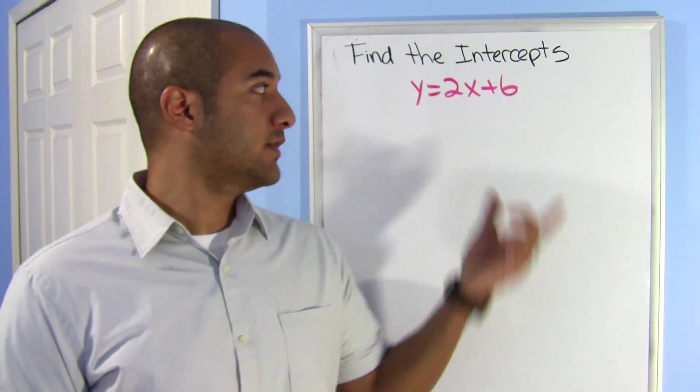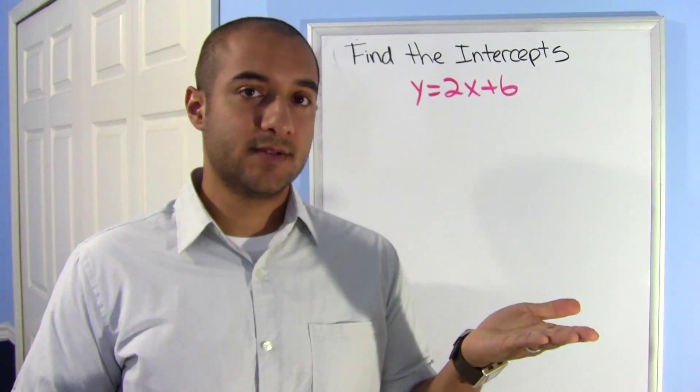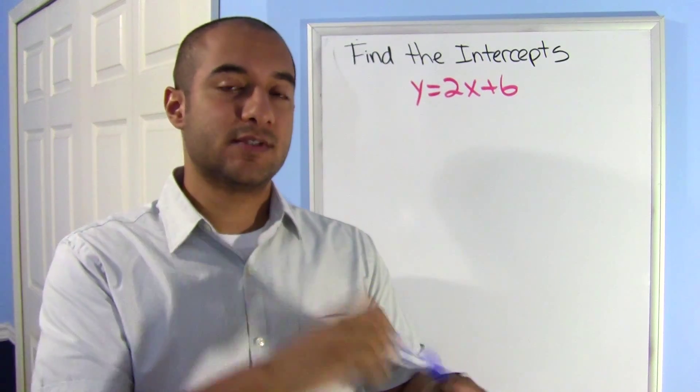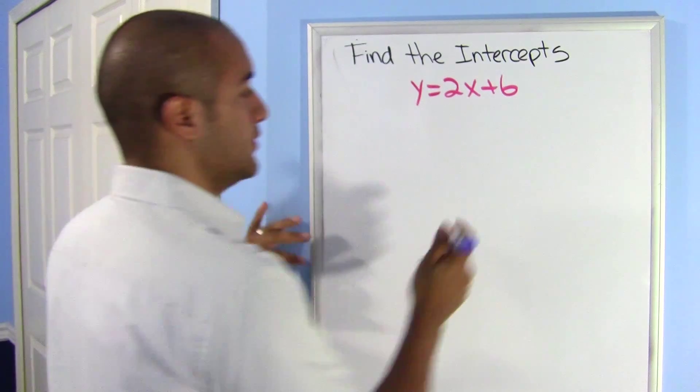Alright, when you're looking for intercepts, you want to know when this graph is going to cross the x-axis and when it crosses the y-axis, where it hits it, where it intercepts it. So to do that, this is what we do.